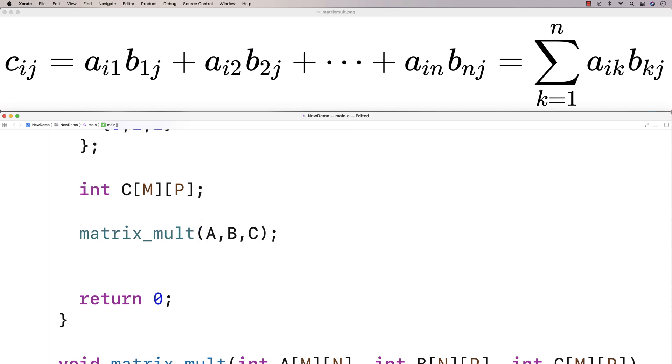Now to actually see the results, we're going to have to print out the matrix C. So we'll do that as well. Here I'll say for (int i = 0; i < M; i++).